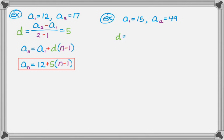So d is going to be, it's a sub 12 minus a sub 1 over 12 minus 1. And if we plug in, we have 49 minus 15 over 11. So that's going to be 34 over 11 is the value of d.